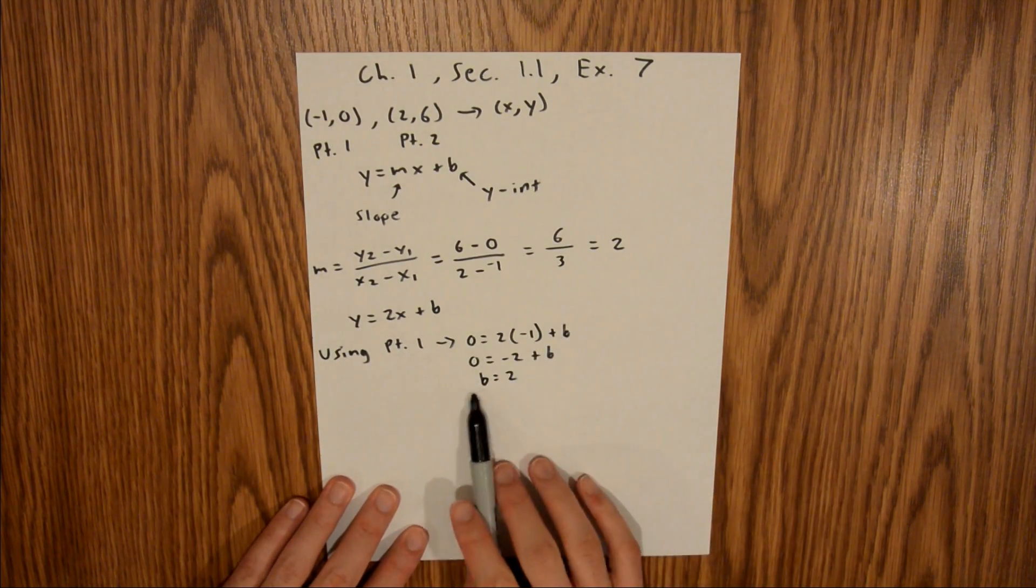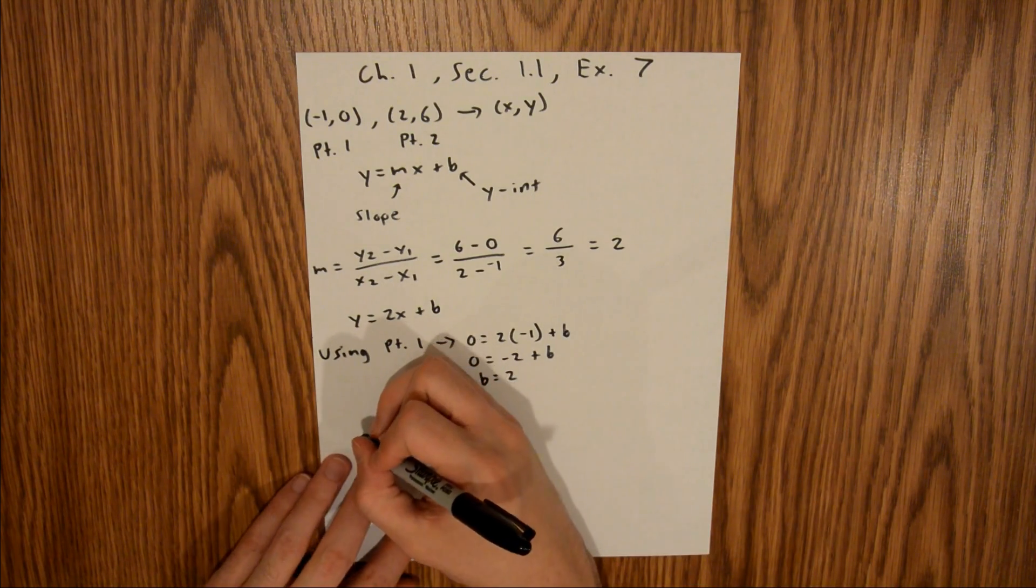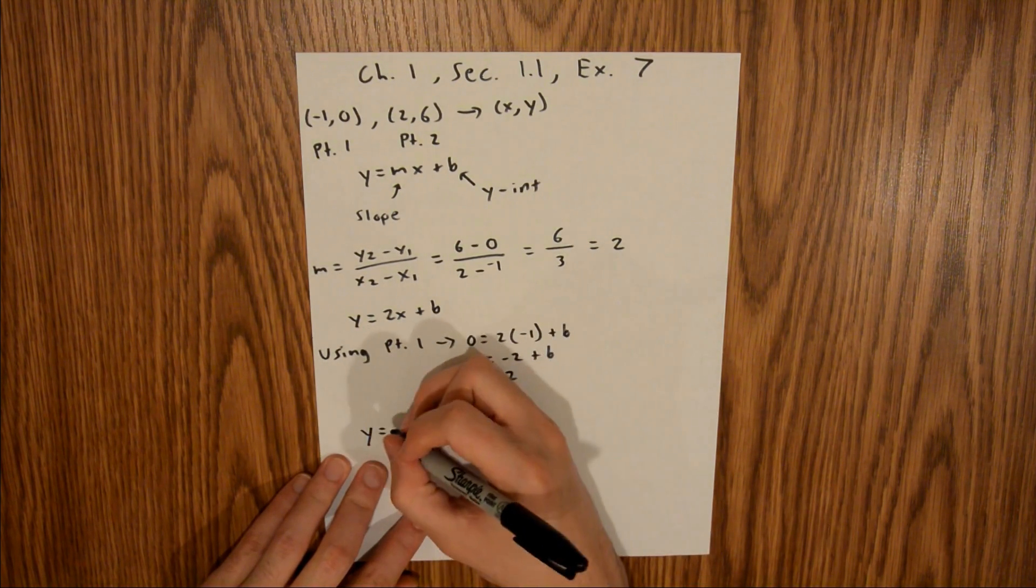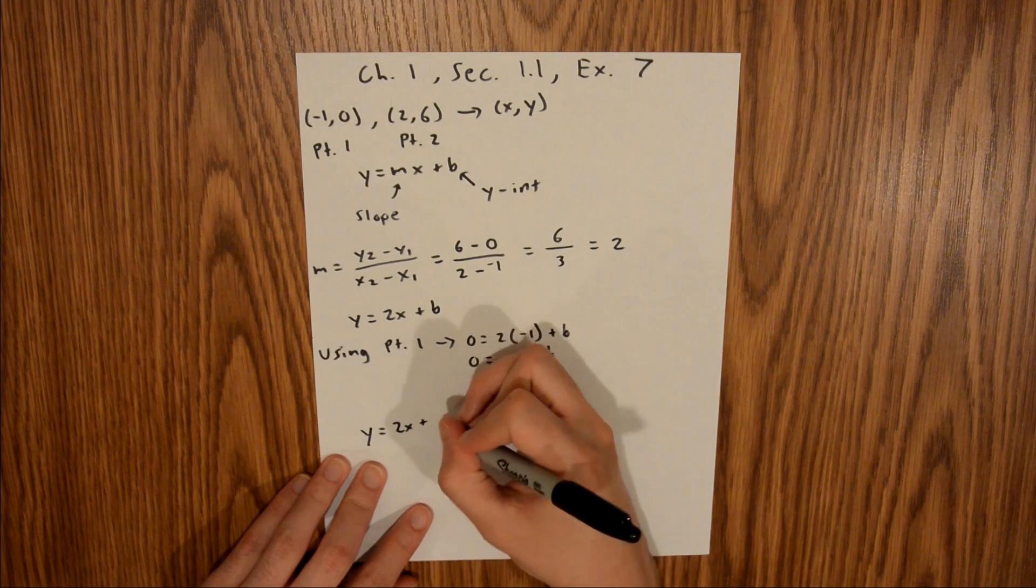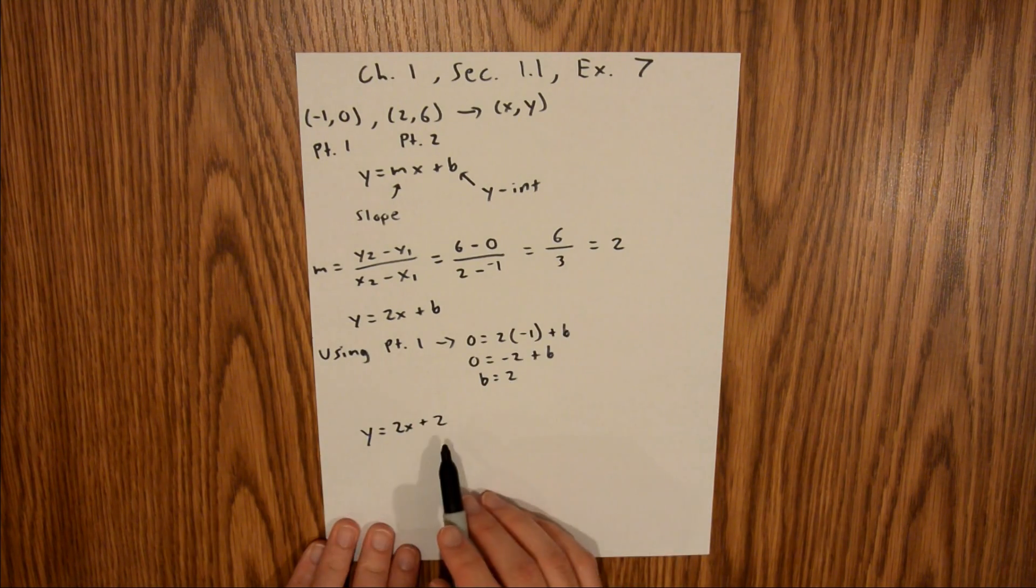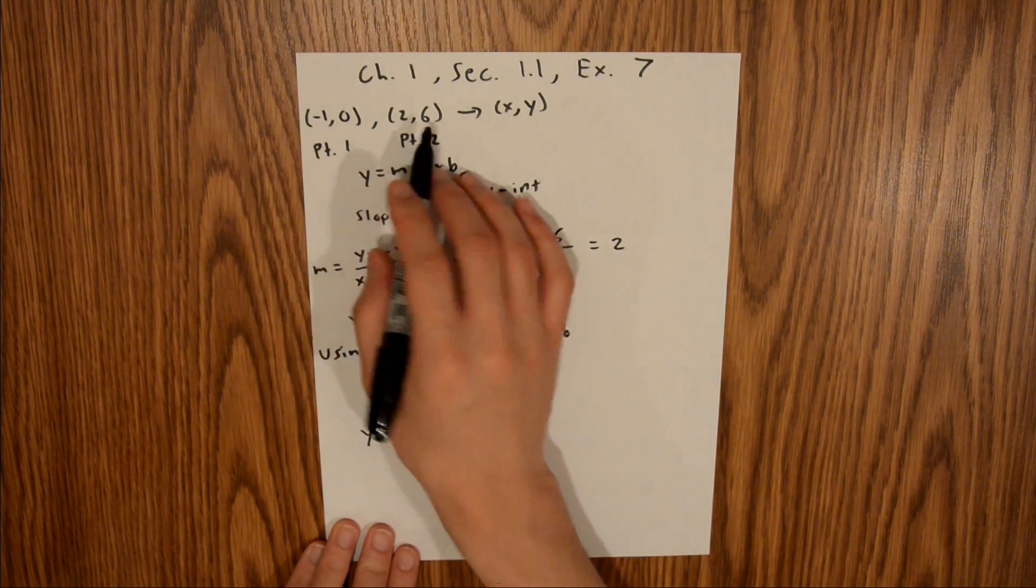Now we can take that y-intercept and plug it into our equation. That gives us y = 2x + 2. That is the equation of the line that passes through these two points.